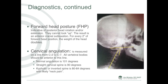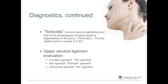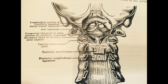Forward head posture — for cervical angulation, normal is 101 degrees, a straight spine is 90 degrees, and a kyphotic spine is 80 to 84 degrees. Torticollis works primarily at C6 and C7. Upper cervical ligament evaluation involves the 'yes' ligament, 'no' ligament, and 'I don't know' ligament — the transverse, alar, and cruciate ligaments.